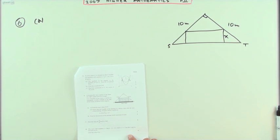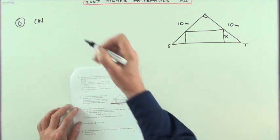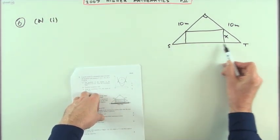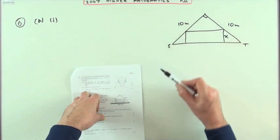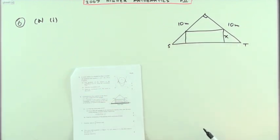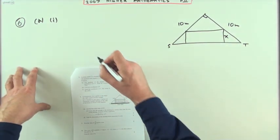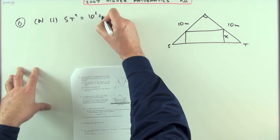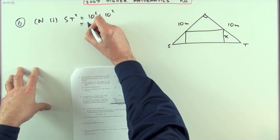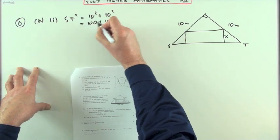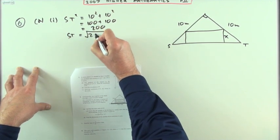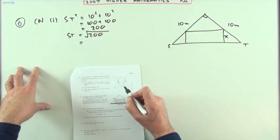So what have you got here? It even breaks it down for you: find the exact value of ST for one mark. Well, ignoring the shape in the middle, ST just forms the hypotenuse of this right angle triangle with sides 10 and 10. So you could set it out that way if you liked. You could say ST squared is 10 squared plus 10 squared, 100 plus 100, which is 200.